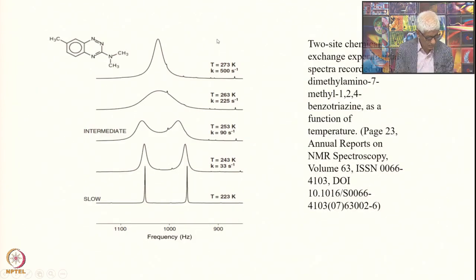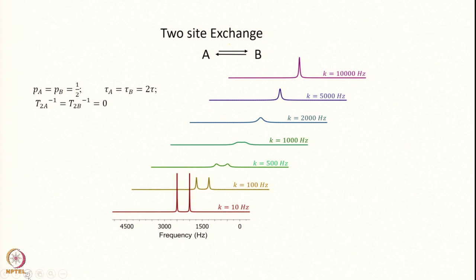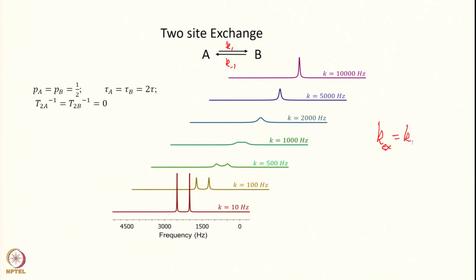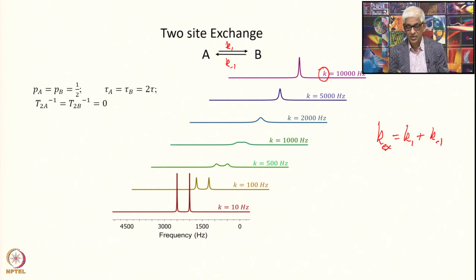Writing the forward exchange rate as k1 and the backward exchange rate as k-minus-1, the exchange rate is defined as k_exchange = k1 + k-minus-1. A single time constant describes the process of exchange, defined as k_exchange.